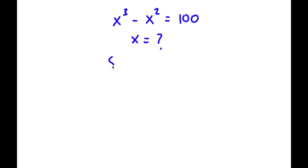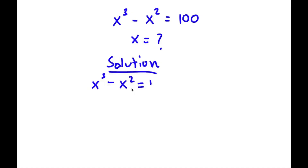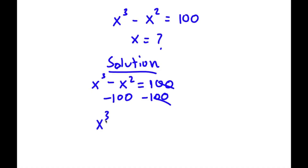For my solution, first start with x to the power of 3 minus x squared is equal to 100. Now what I'm going to do is subtract 100 on both sides, so these two will cancel out on my right-hand side. I'll be left with x to the power of 3 minus x squared minus 100 is equal to 0.